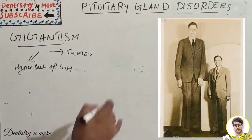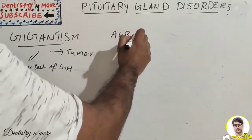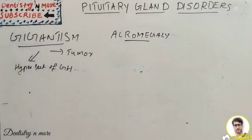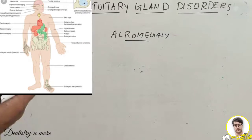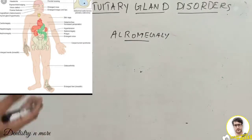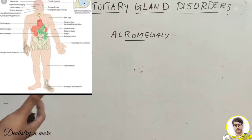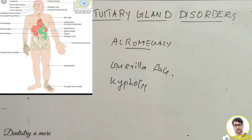Gigantism ends in hypopituitarism, which is a burnout of cells of the anterior pituitary. Next is acromegaly, another hypersecretion condition. Acromegaly is an anterior pituitary disorder characterized by enlargement, thickening, and broadening of the bones, particularly the extremities of the body. The causes are again hypersecretion of growth hormone or a tumor in the anterior pituitary.